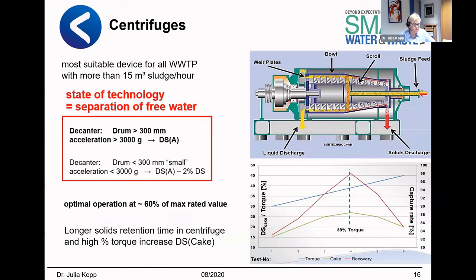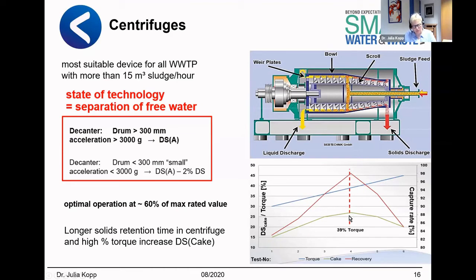Most common are also centrifuges. The incoming sludge is conditioned inside the pipe, thrown out onto the bowl, transported by the screw, and the water flows out. The operation of the centrifuge is related to the torque — the power needed to bring the sludge out of the bowl. With increasing torque you get better dewatering results up to a certain point. Afterward, the shear stresses are so high that all flocks are destroyed, the capture rate goes down, and the cake too. State of technology: if you have a large centrifuge — more than 15 cubic meters per hour — you can release all free water, and operate optimally at about 60% of max rated value.